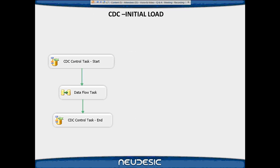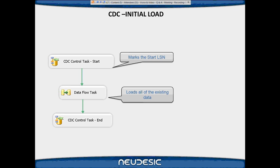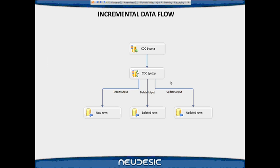For a typical initial load, in the control flow you would have a CDC Control Task to start capturing the log sequence number at the beginning, a data flow to pull all records into your target, and a CDC Control Task at the end to mark the end of the sequence. For the incremental data flow, you have the CDC Source pulling changes, the CDC Splitter distributing based on the type of changes, and you load your staging tables accordingly.